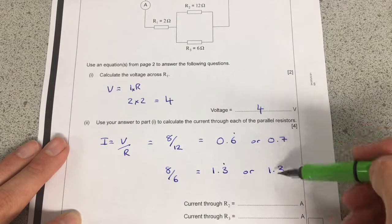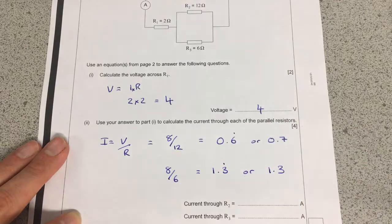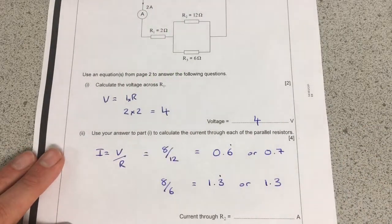Now if you notice, this is what I was talking about before, 0.7 plus 1.3 adds up to 2. And that's the same over here as well. So that adds up to the same current we had at the beginning up here.